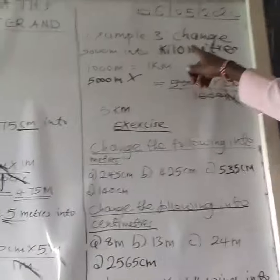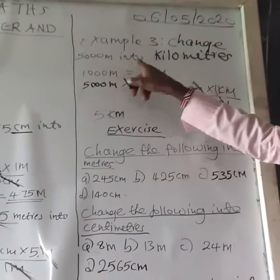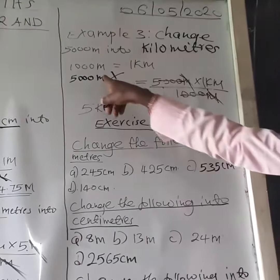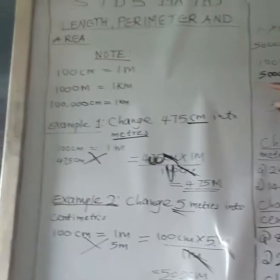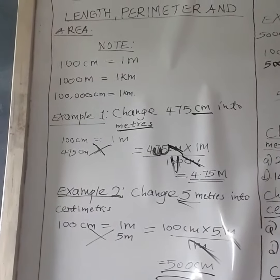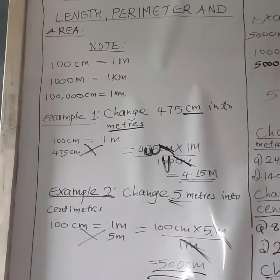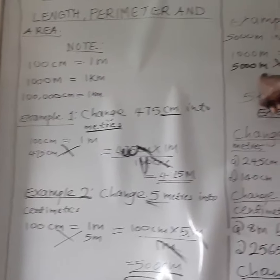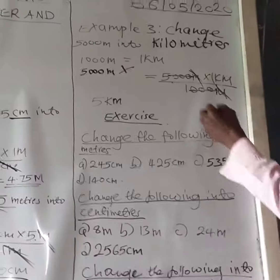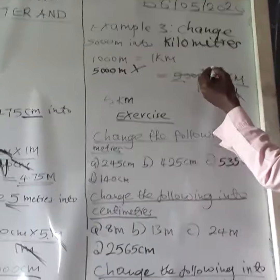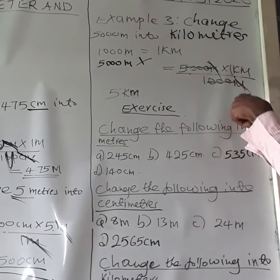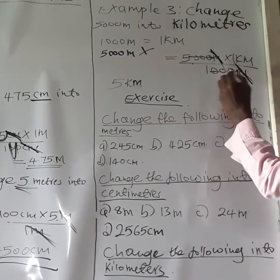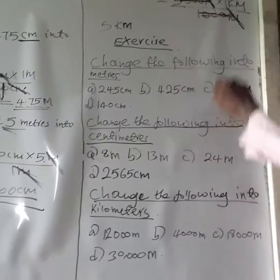In Example 3, we are changing 5,000 meters into kilometers. What is the relationship between meters and kilometers? You can go back to the note — 1,000 meters is equal to 1 kilometer. What are 5,000 meters? You cross-multiply: 5,000 meters times 1 kilometer over 1,000 meters. Meter will cancel meter. You have three zeros here, so you cancel three zeros above.